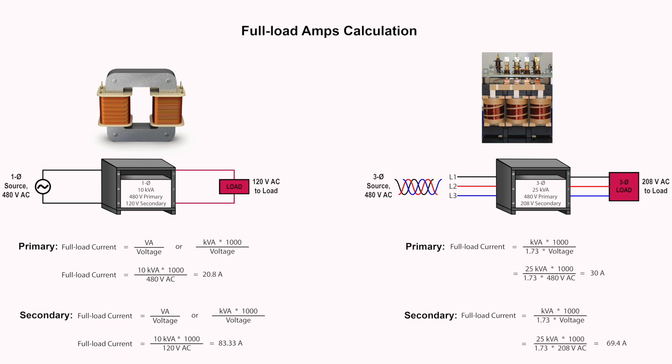Next, we have a 3-phase 25 kilovolt amp transformer rated 480 volts primary and 208 volts secondary. Using the full load current equation, the primary and secondary full load current are calculated as follows.